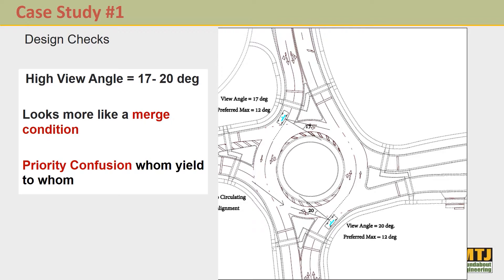Here's the first optimization case study in Ohio. Looking at the original design, it has a high view angle of 17 to 20 degrees — we prefer closer to 10 to 12 degrees. When entries are flatter, it looks more like a merge condition, and drivers exhibit less yielding behavior and more merging behavior. Confusion about who yields to whom is also a problem with flatter angles. It's about 17 degrees in the southbound direction and about 20 degrees, measured in the outside lane looking back to the left — 17 degrees off of 90.